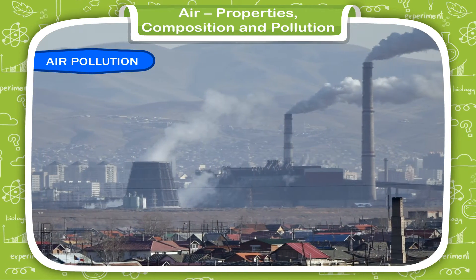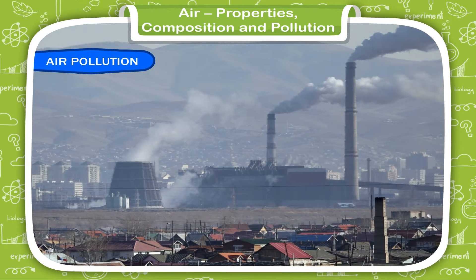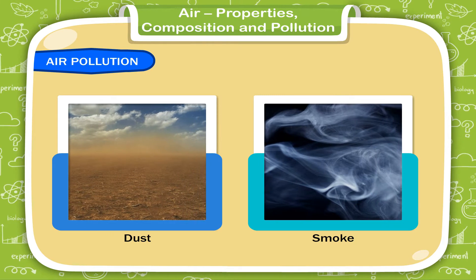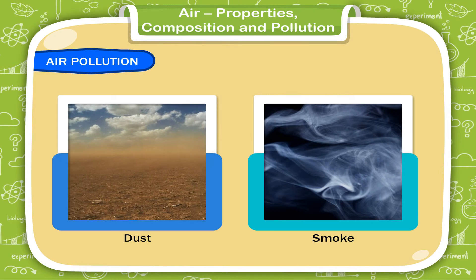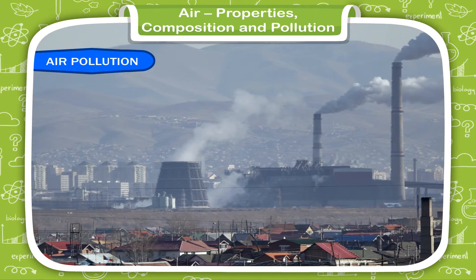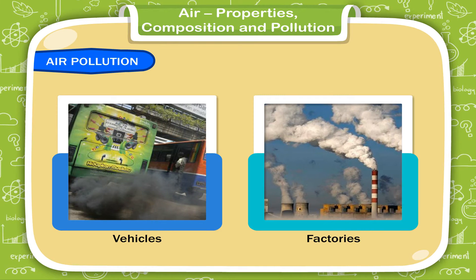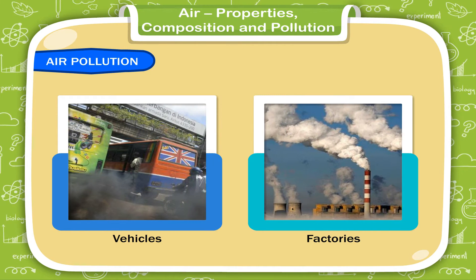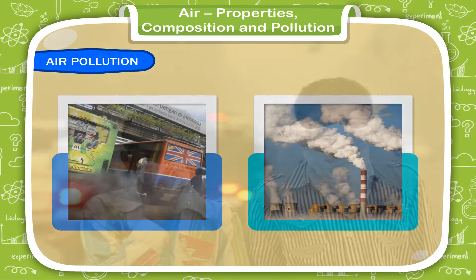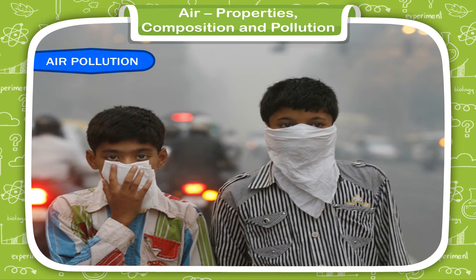Air Pollution: apart from useful gases, air also contains dust, smoke and some harmful gases. These things pollute the air. Smoke and harmful gases that come out from vehicles and factories make the air polluted. These harmful impurities in air are called pollutants. Polluted air is harmful for breathing and can make us sick.